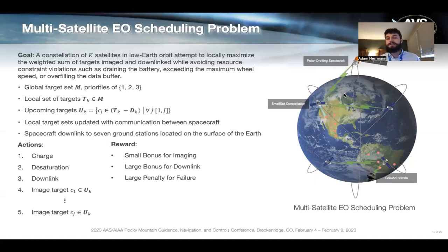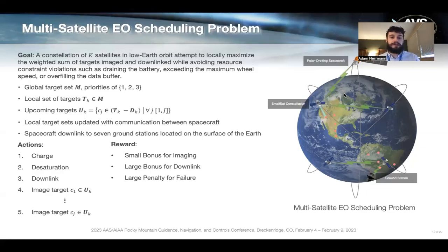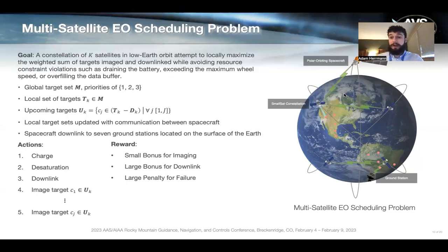Skipping past the state space, the reward function works as follows: each agent receives a very small bonus for imaging an unimaged target, a relatively large bonus for downlinking a target not previously downlinked, and a large penalty for failure. The reward function is tuned such that the minimum cumulative reward is −1 and the maximum is +1, keeping things numerically well-conditioned.